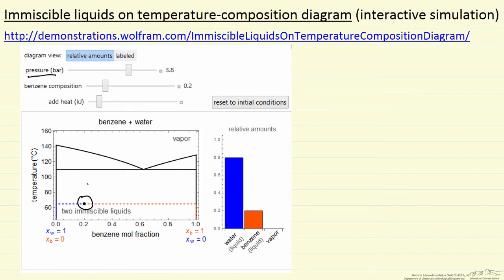We can change the benzene composition, and as we move that slider, this black dot is going to move to the right or left, and correspondingly the amounts of each phase are going to change, and then we can add heat to the system.